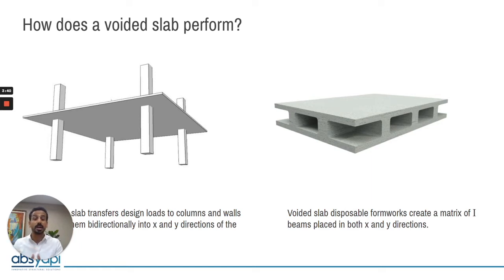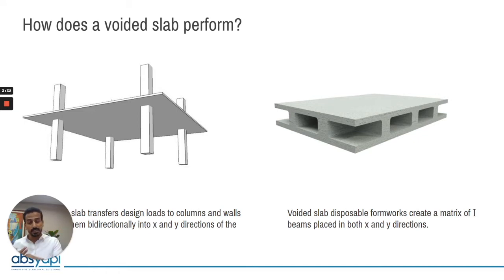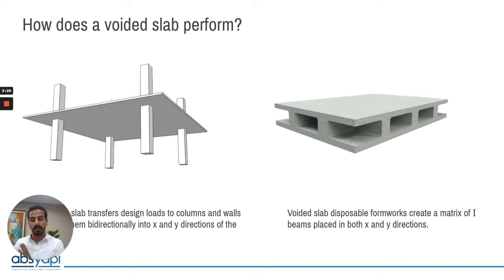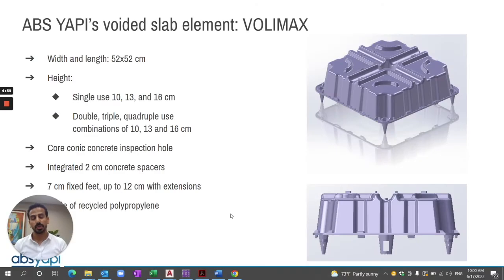I create the void and reduce the slab self-weight, but the behavior remains the same as a flat slab. I can achieve larger spans than a flat slab, and the slab self-weight and total building weight will be less than a solid or flat slab.